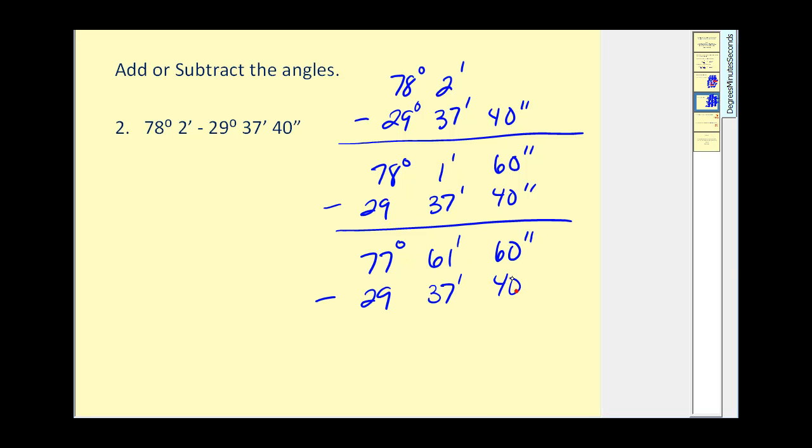60 seconds minus 40 seconds would be 20 seconds. 61 minutes minus 37 minutes would be 24 minutes. And 77 degrees minus 29 degrees would be 48 degrees. And here we have our final answer.